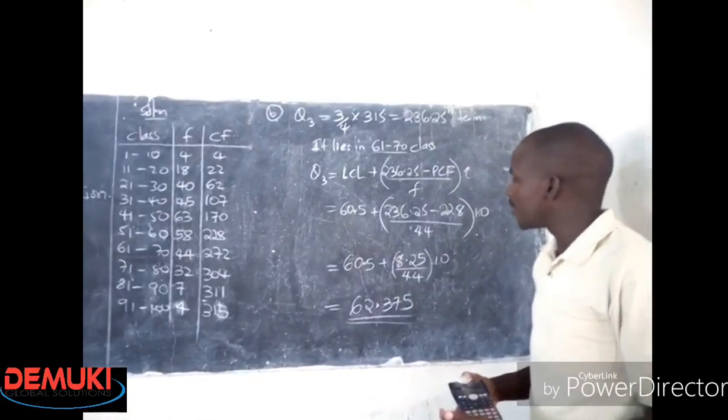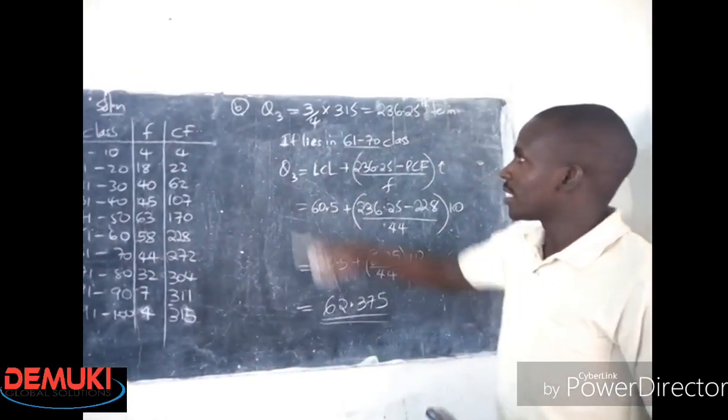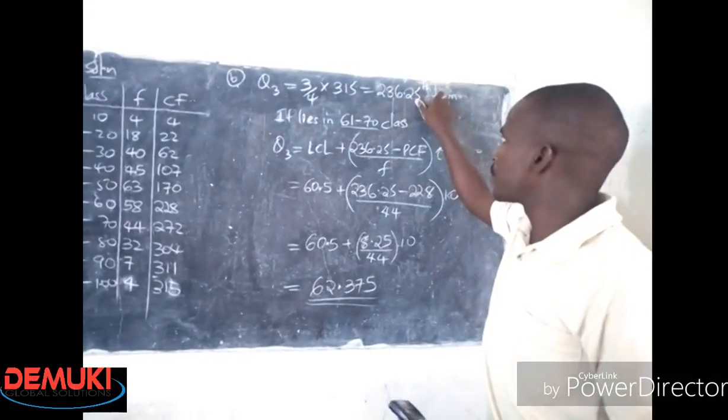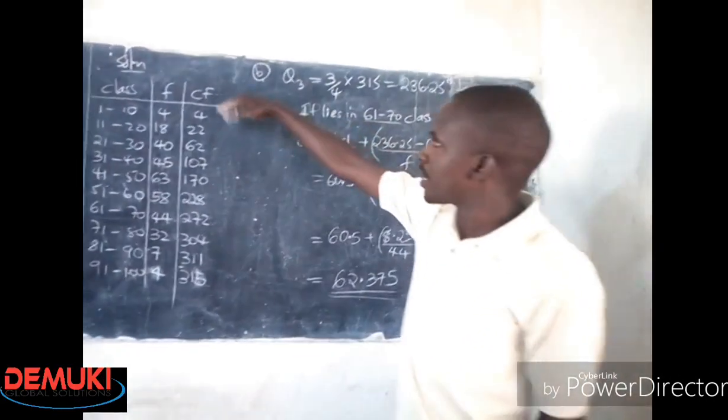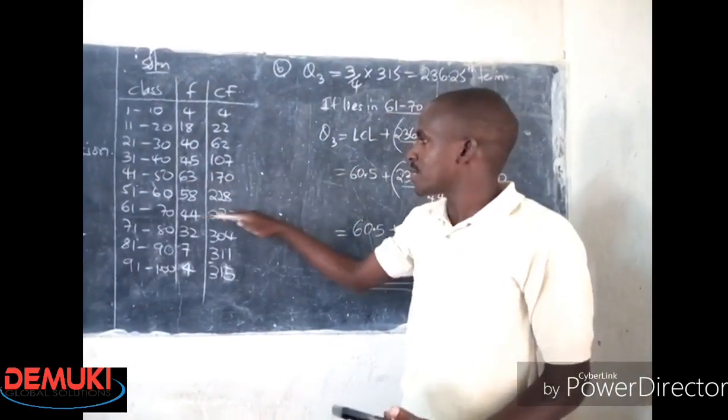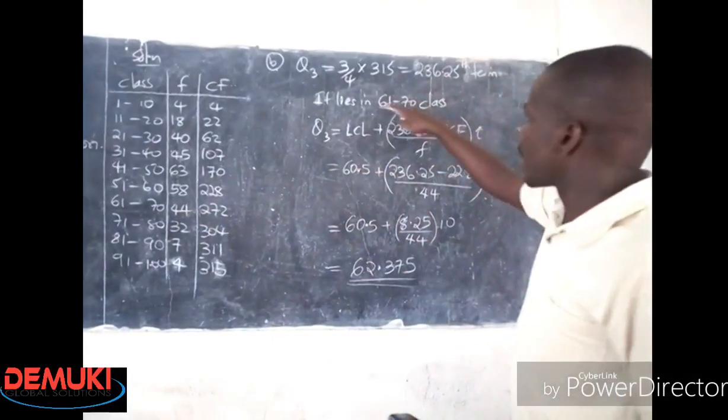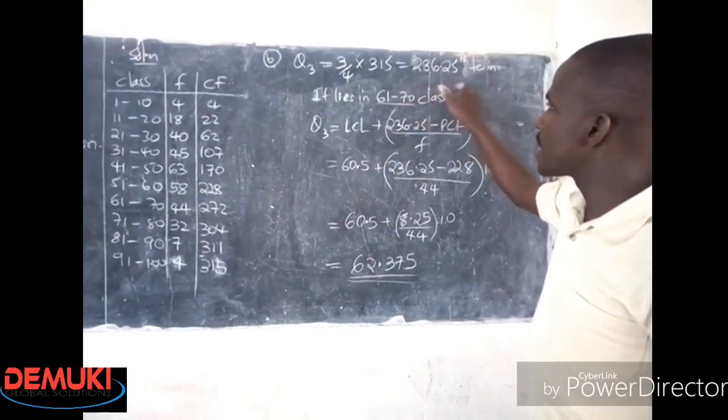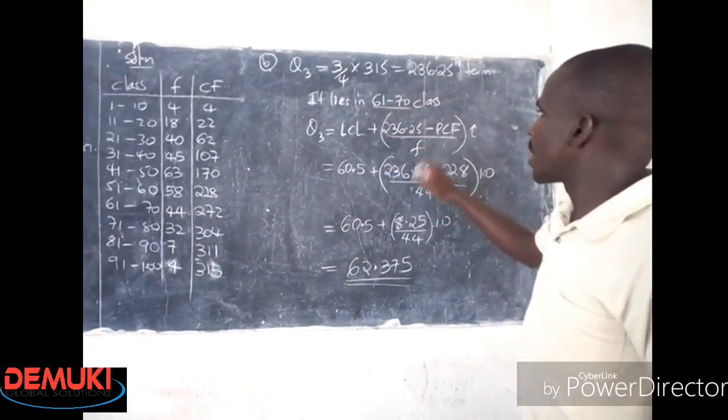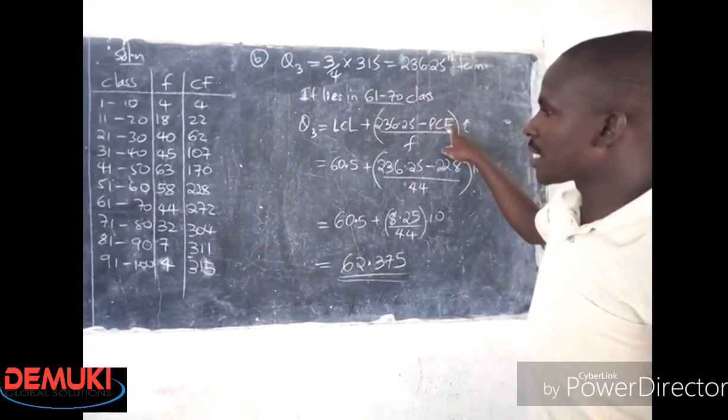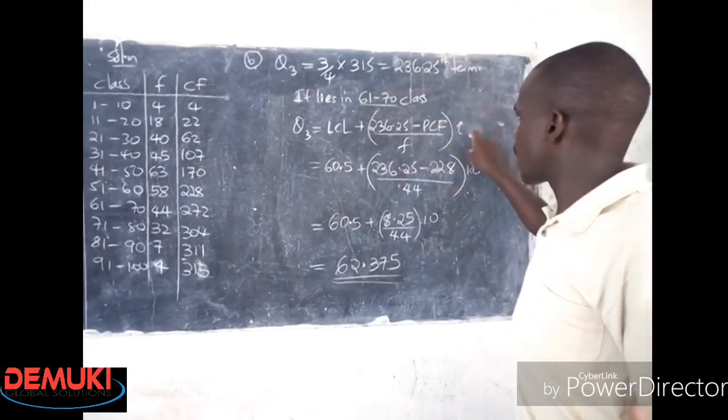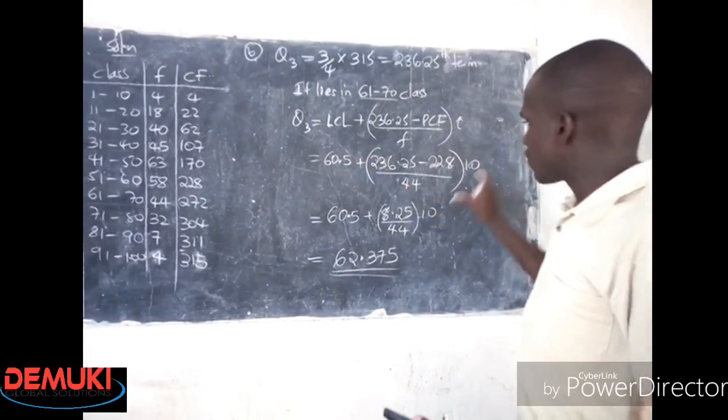That's how you get your upper quartile. Get three quarters of the total number of terms, get the position, determine from the cumulative frequency which class that term lies in. Then using that class, get the previous cumulative frequency of that class, class frequency of that class, class size, lower class limit. Just follow these steps.